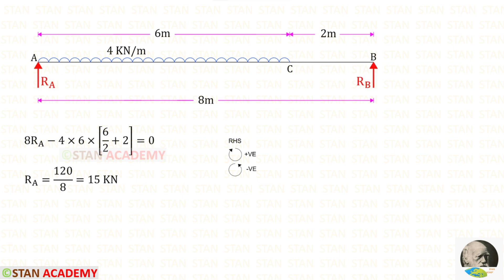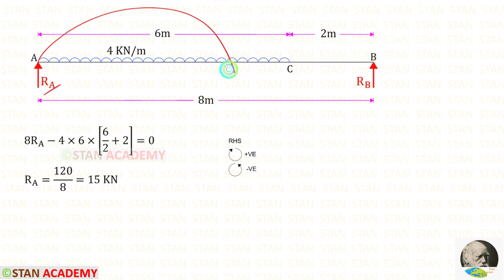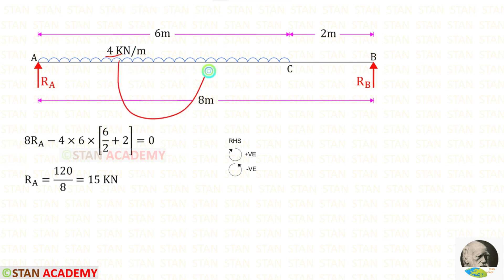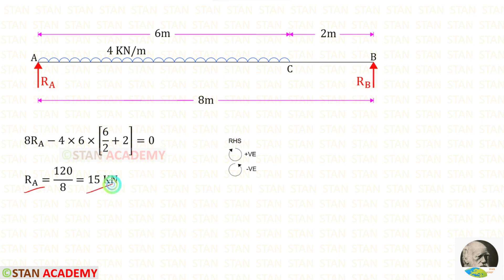First let us find the vertical reaction RA by taking moment about B. RA is acting in the clockwise direction so it will be positive, and the distance is 8, so 8·RA. This load is acting in the anti-clockwise direction so it will be negative, and we divide the distance 6 by 2 then add the remaining distance of 2. For RA we will get 15 kilo newton.